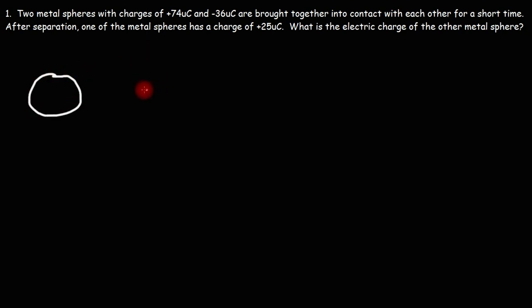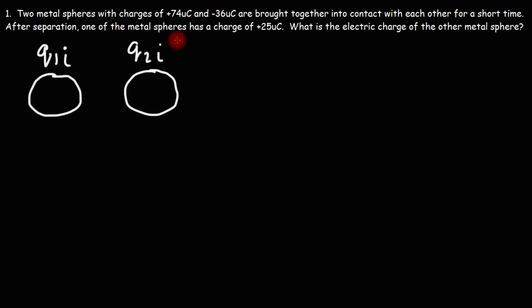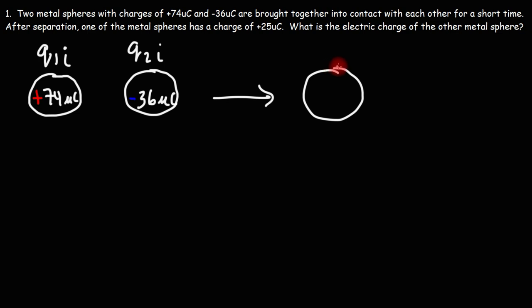Let's draw two pictures. We'll say this is charge 1 initial, so that's before contact. And here's another metal sphere, we'll call it charge 2 initial. Charge 1 has a positive charge of +74 microcoulombs, and charge 2 is negatively charged at -36 microcoulombs. After contact, we have charge 1 final, Q1 final, with a charge of positive 25 microcoulombs.